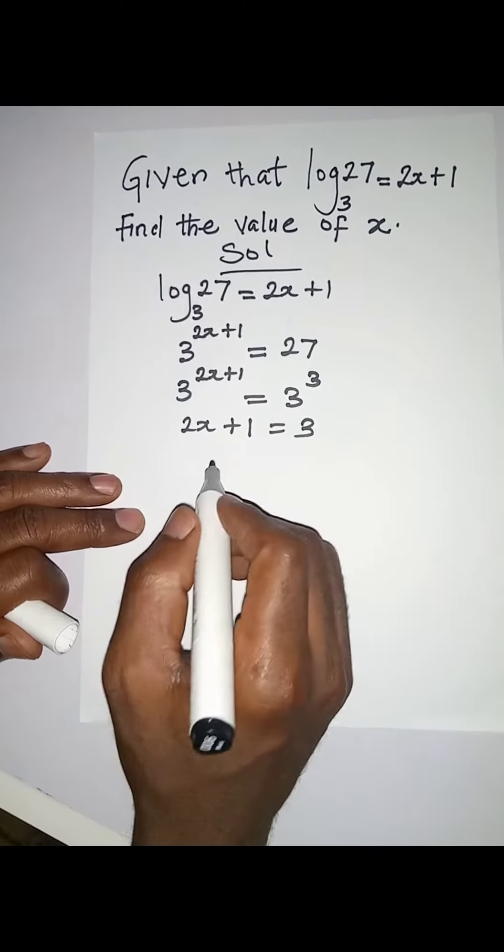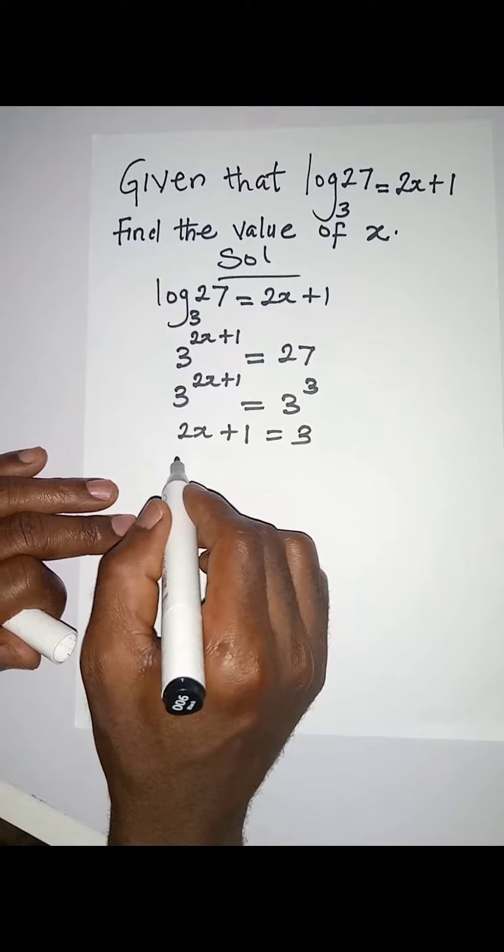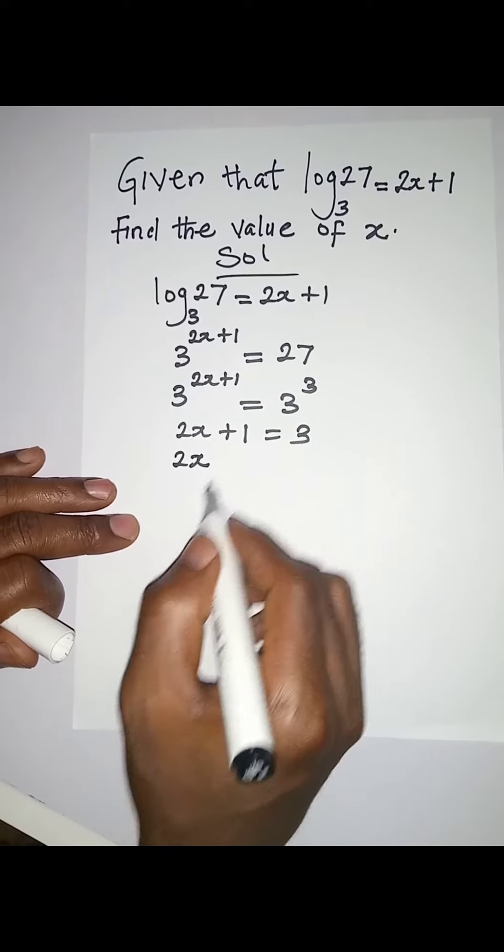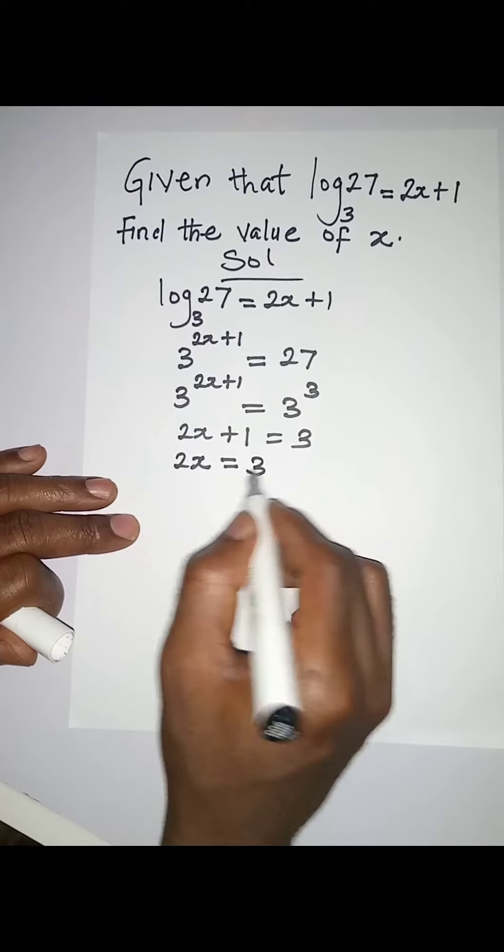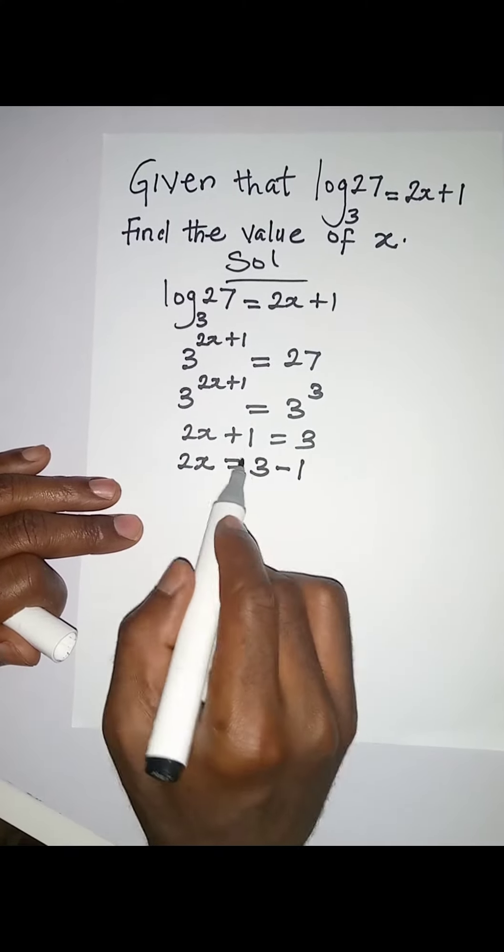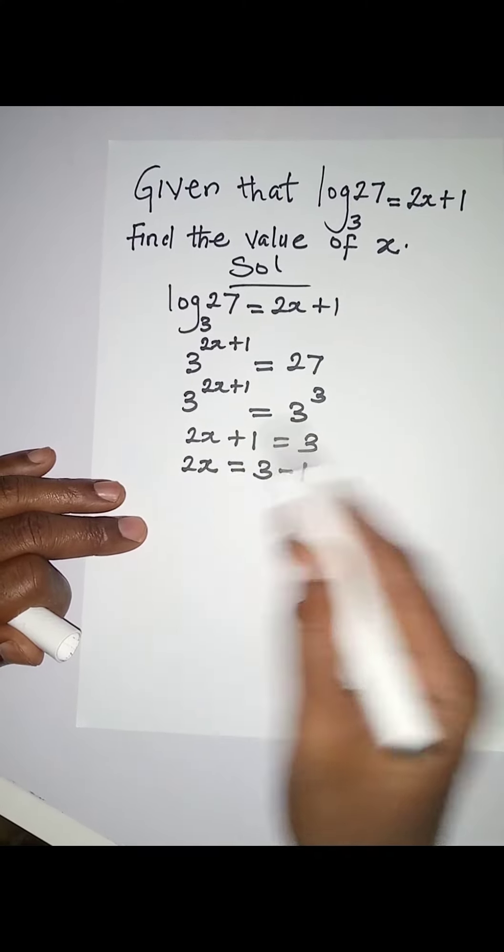Now what do I do? Collect like terms so that 2x will be free. It will be equal to 3 - 1. The +1 is on the left-hand side; on the right-hand side it becomes -1. So 2x = 2.